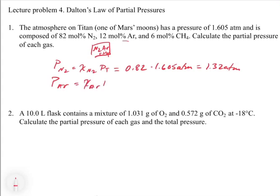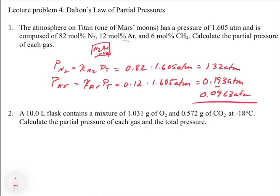For argon, the mole fraction times total pressure is 0.12 times 1.605 atmospheres, which equals 0.193 ATM. For methane, that's 0.06 times 1.605, giving 0.0963 ATM. If you add all three partial pressures up, you get back 1.605 ATM. This confirms that all three components add back up to the total — a useful way to check that everything is working out correctly.